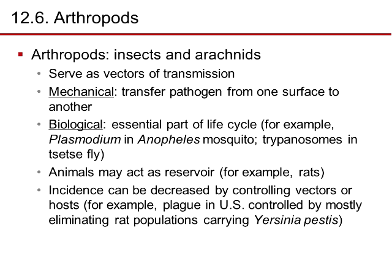Arthropods — insects and arachnids — serve as vectors of disease transmission. Mechanical vectors physically transfer pathogens from one surface to another; biological vectors are an essential part of the pathogen's life cycle — for example, Plasmodium in the Anopheles mosquito and trypanosomes in the tsetse fly. Animals may also act as a reservoir; for example, rats are a reservoir for many bacteria and parasites. Incidents of plague in the U.S. are controlled mostly by eliminating rat populations carrying Yersinia pestis.